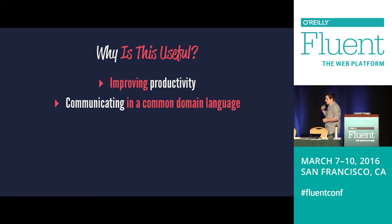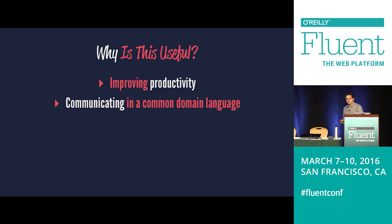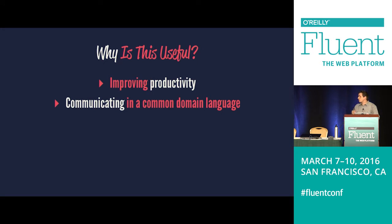Another useful thing for languages is that they create a common domain language between you and your clients. Say you're working on a banking application. Some terms that the bank might use to describe transactions, clients, or accounts may be different from the language you use, which is based on the underlying framework or JavaScript itself. You could use a DSL as a way of bridging that gap — defining your programming in terms that your client, your domain expert, the application you're building — so that you share a common language with anyone who could feed into the creation of the application.